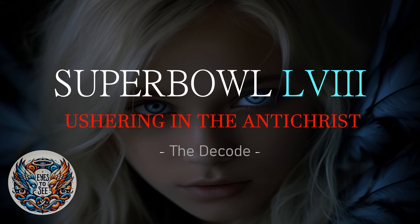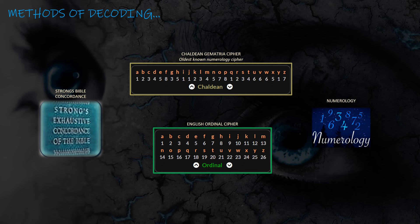My methods of decoding, as always, is going to be primarily the Chaldean gematria cipher. The Chaldean gematria cipher is based on the numbers one through eight, based on the phonetics of the letters — the sounds of the letters. It's similar to the musical scale of do re mi fa sol la ti do, the number eight being the octave. The letters are grouped up by sounds. It's the oldest known numerology or gematria cipher on earth, and I believe it is the most pure and most revealing cipher in gematria.